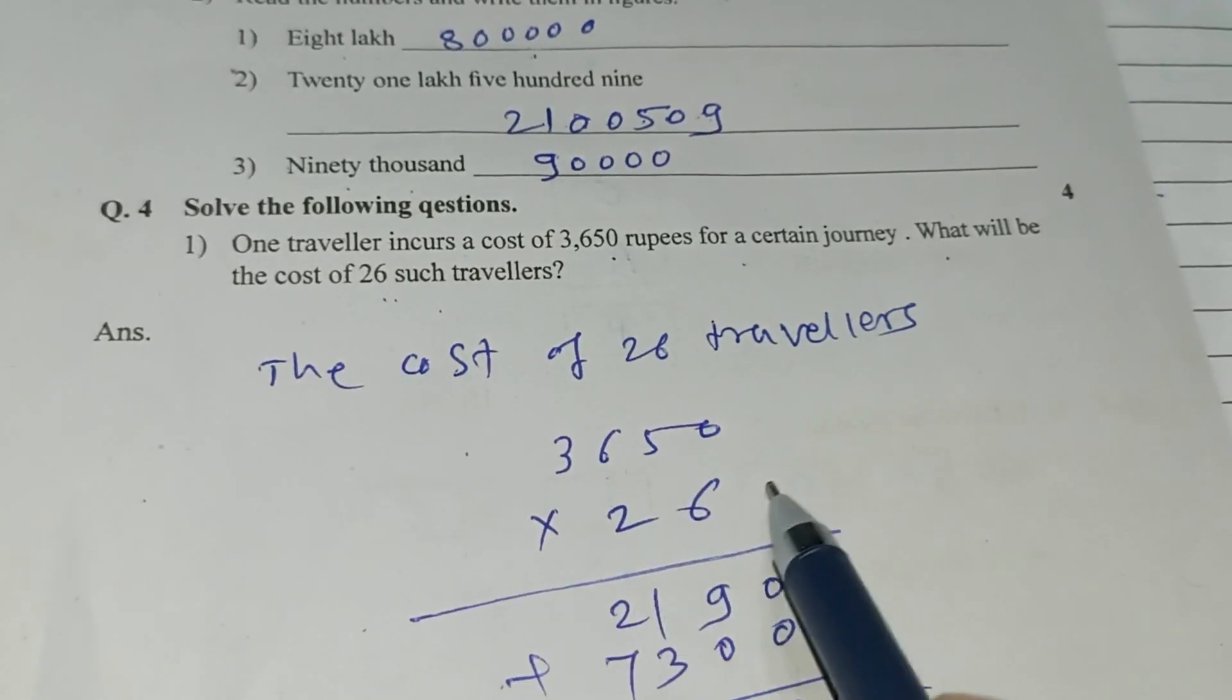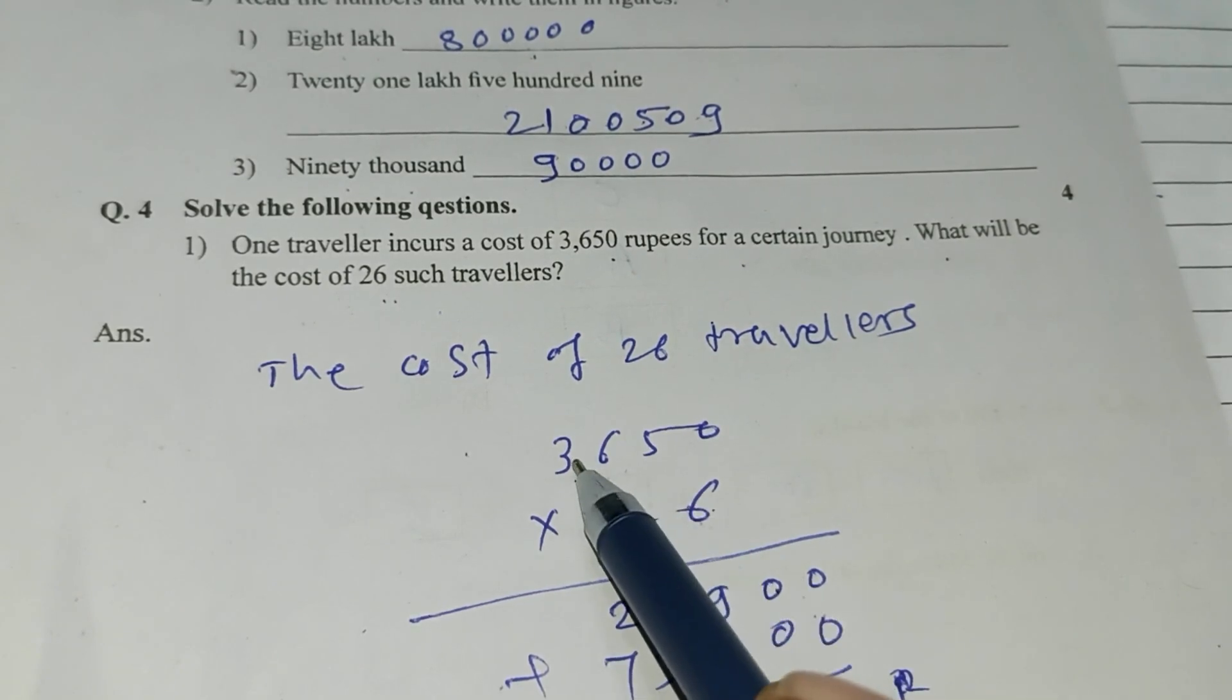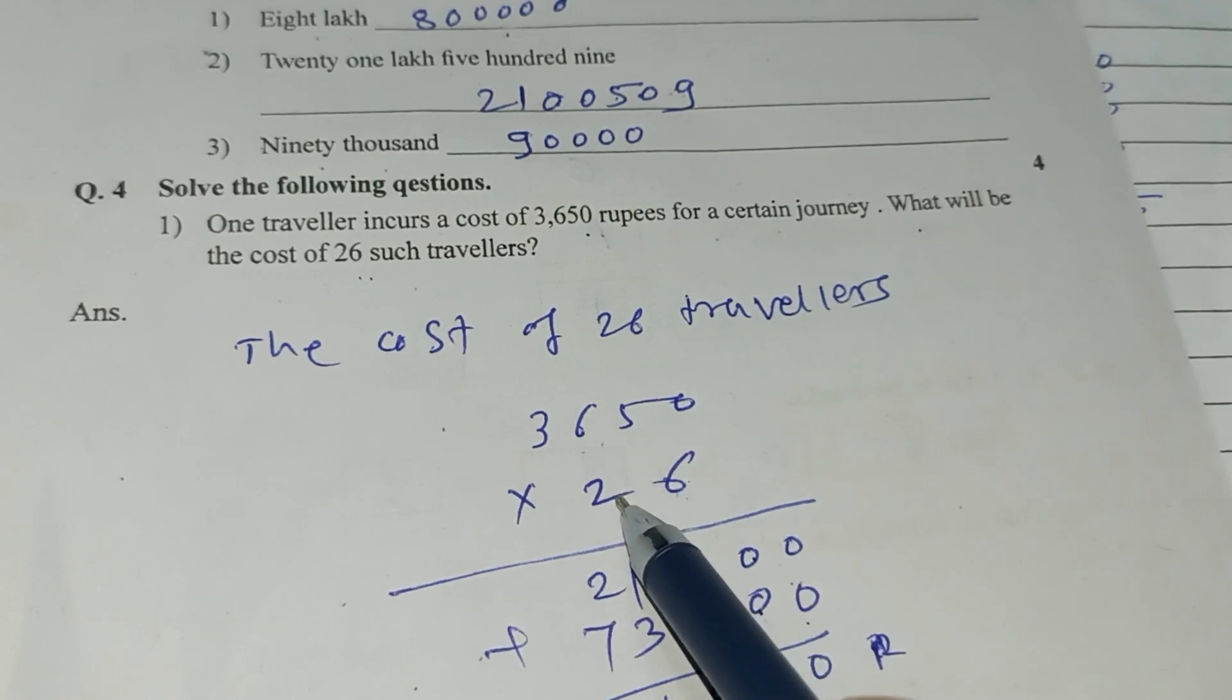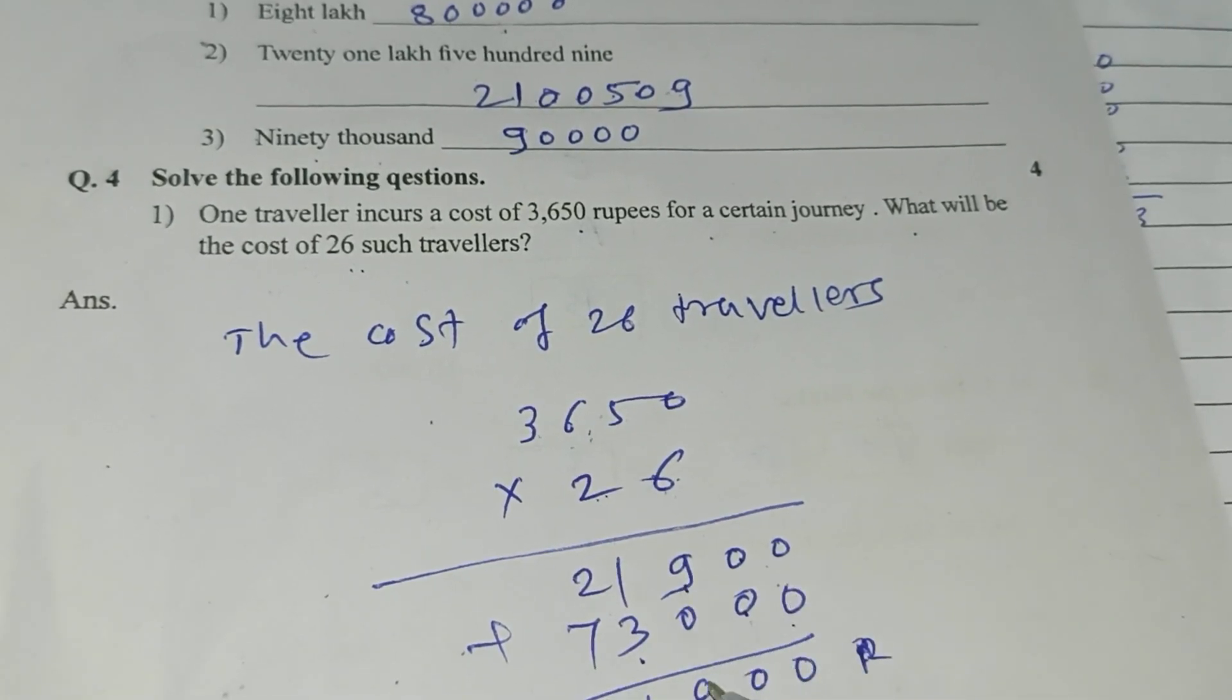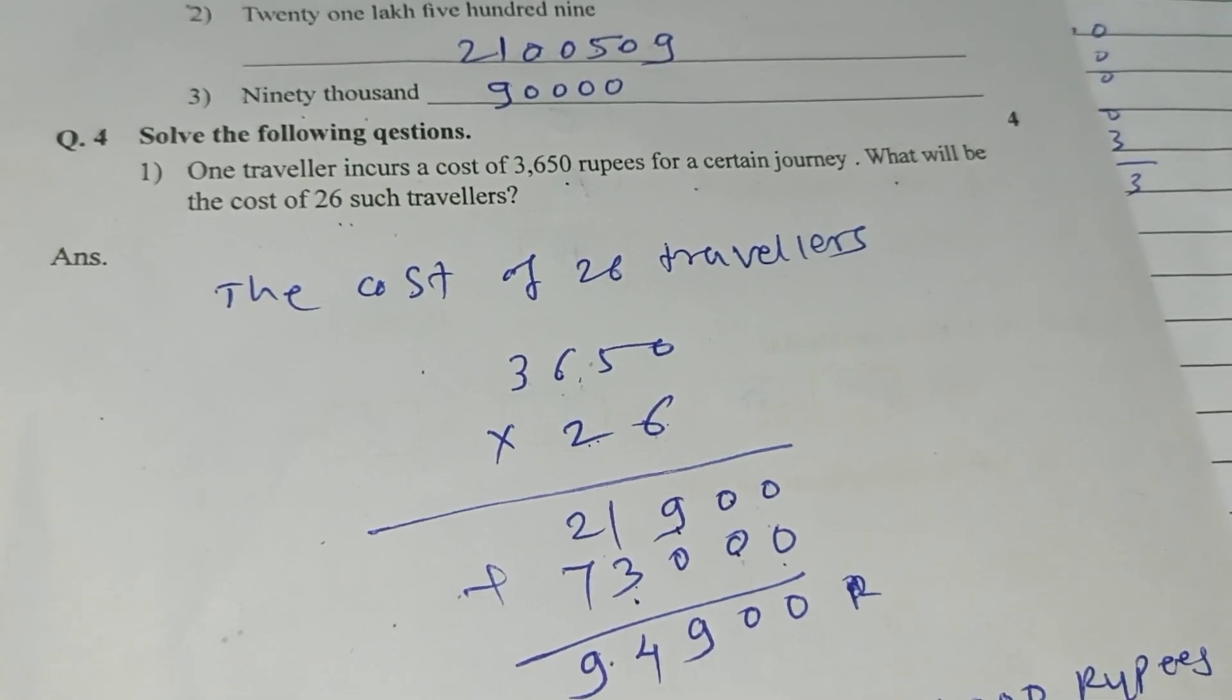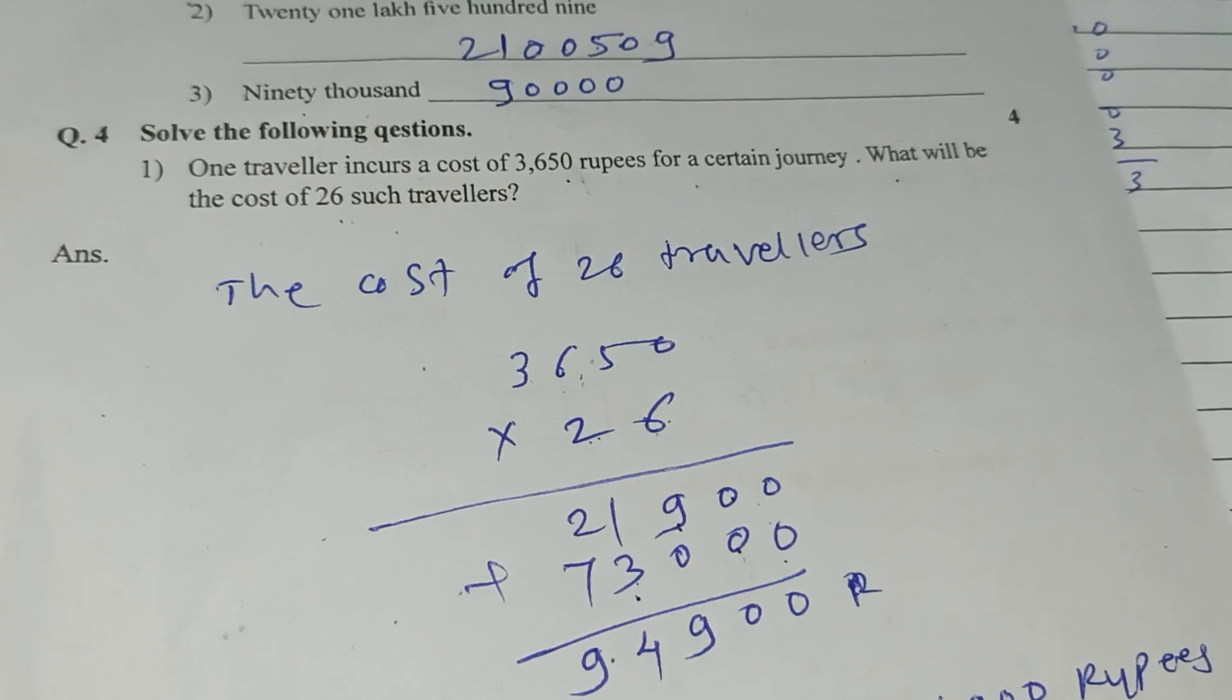3,650 into 26. 6 into 0, 0. 6 into 5, 30. 0, remainder 3. 6 into 6, 36 plus 3, 39. 9, remainder 3. 6 into 3, 18 plus 3, 21. Here 0. 2 into 0, 0. 2 into 5, 10, remainder 1. 2 into 6, 12 plus 1, 13. In last remainder 1, 2 into 3, 6 plus 1, 7. 0, 0, 0, 9. Addition, 3 plus 1, 4. 7 plus 2, 9.